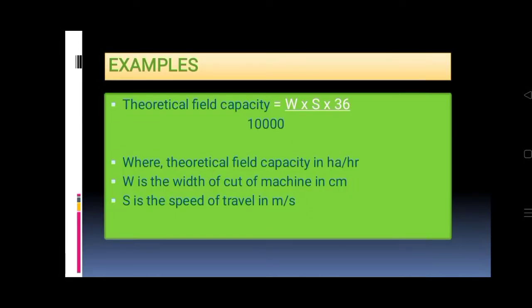Theoretical Field Capacity equals W times S times 36 divided by 10,000, where theoretical field capacity in hectare per hour, W is the width of cut of machine in centimeter, S is the speed of travel in meter per second.